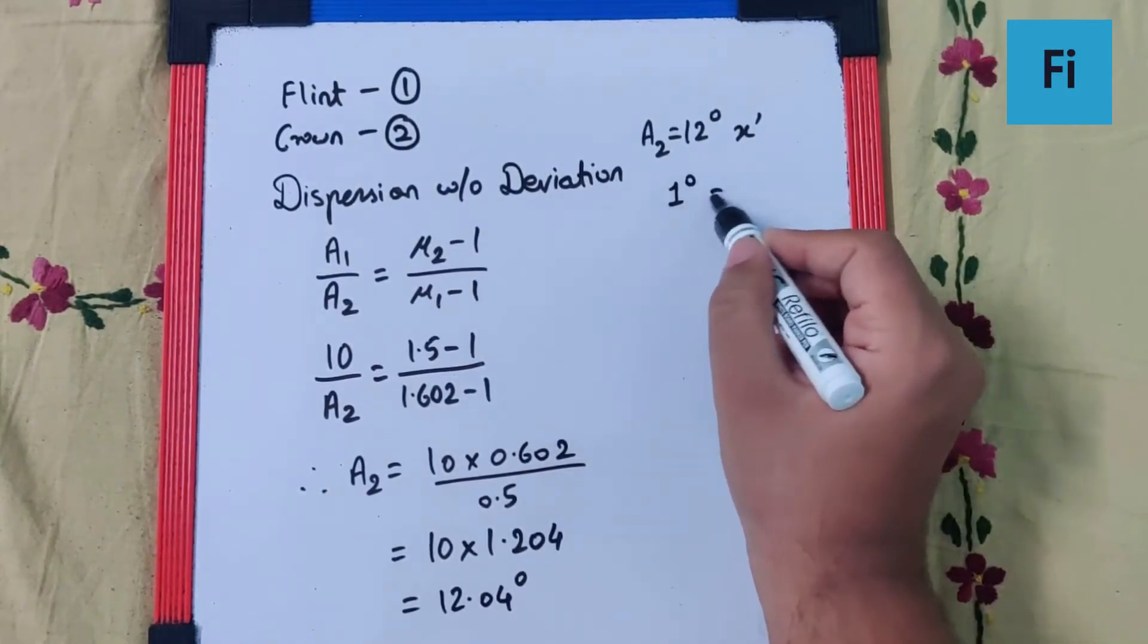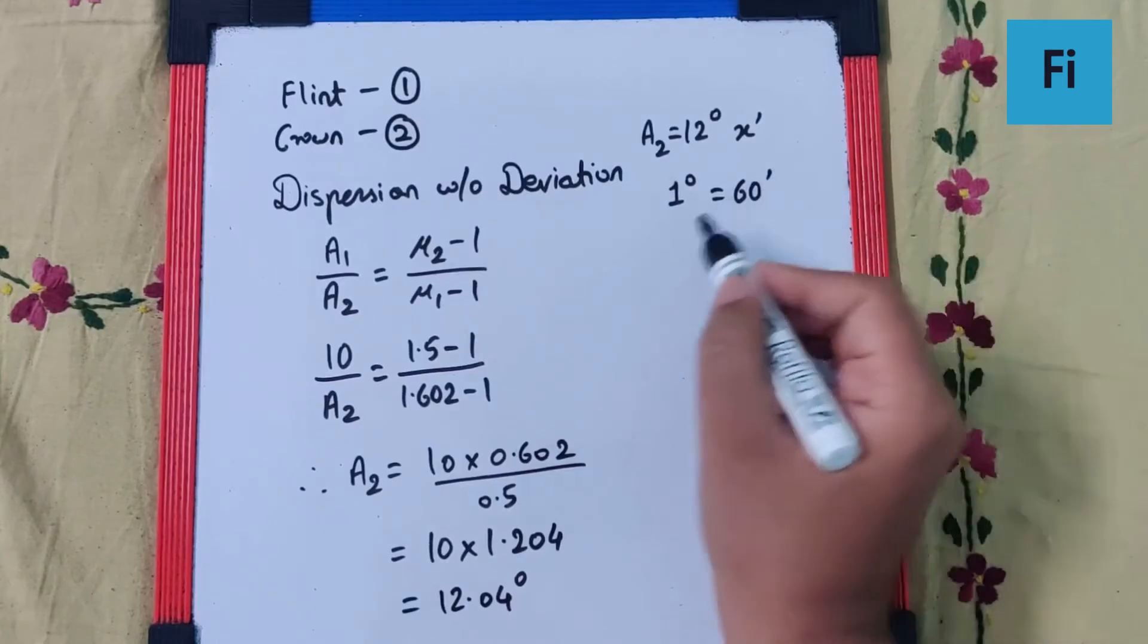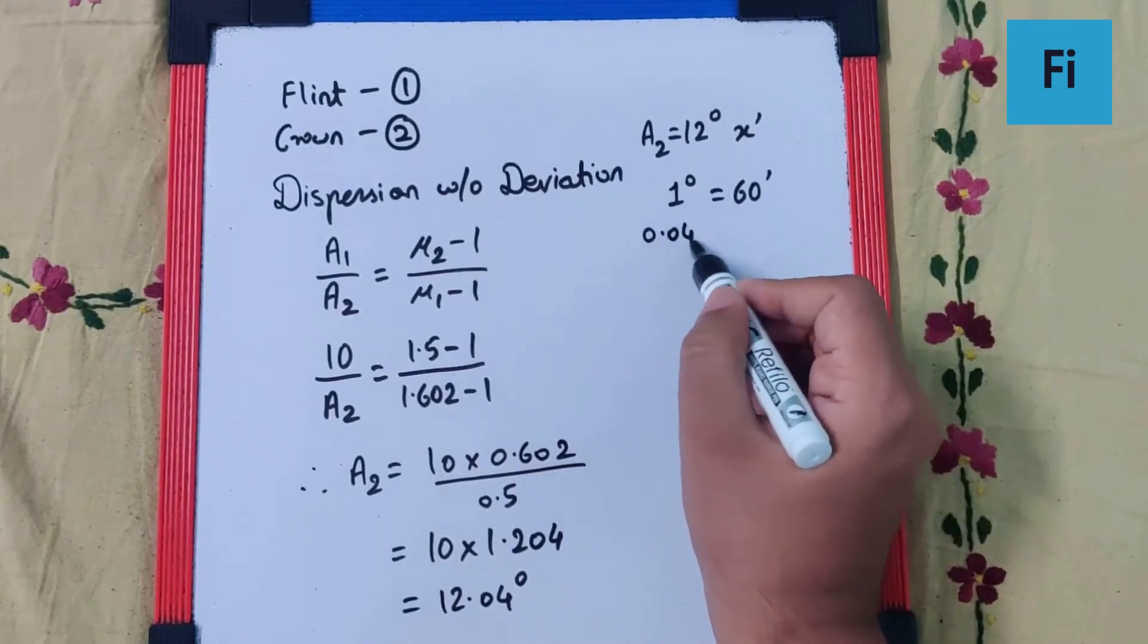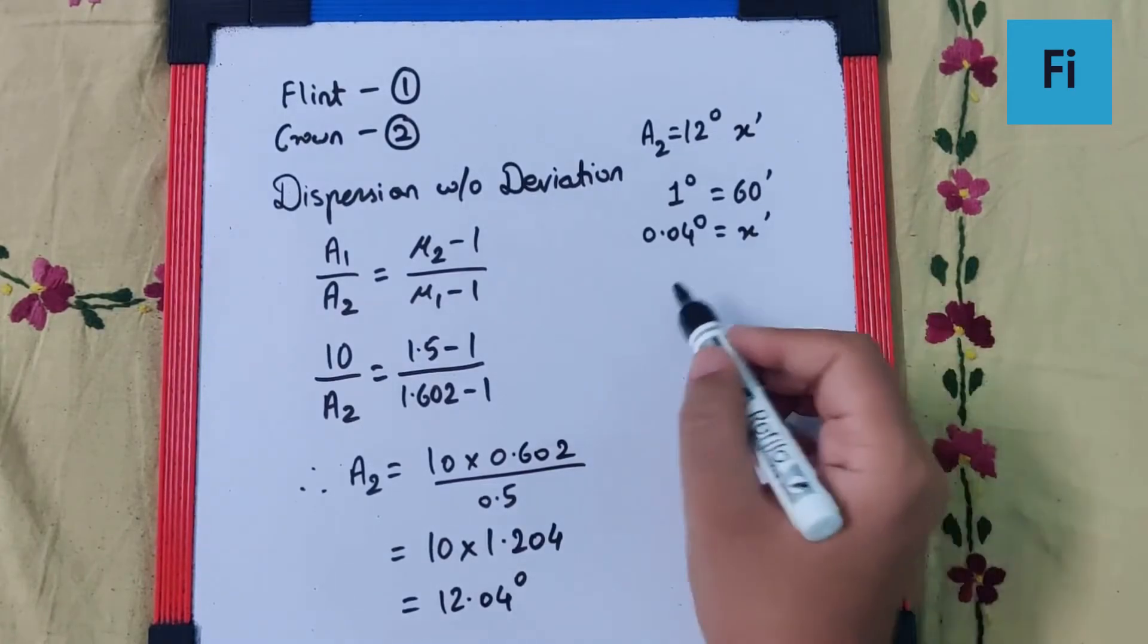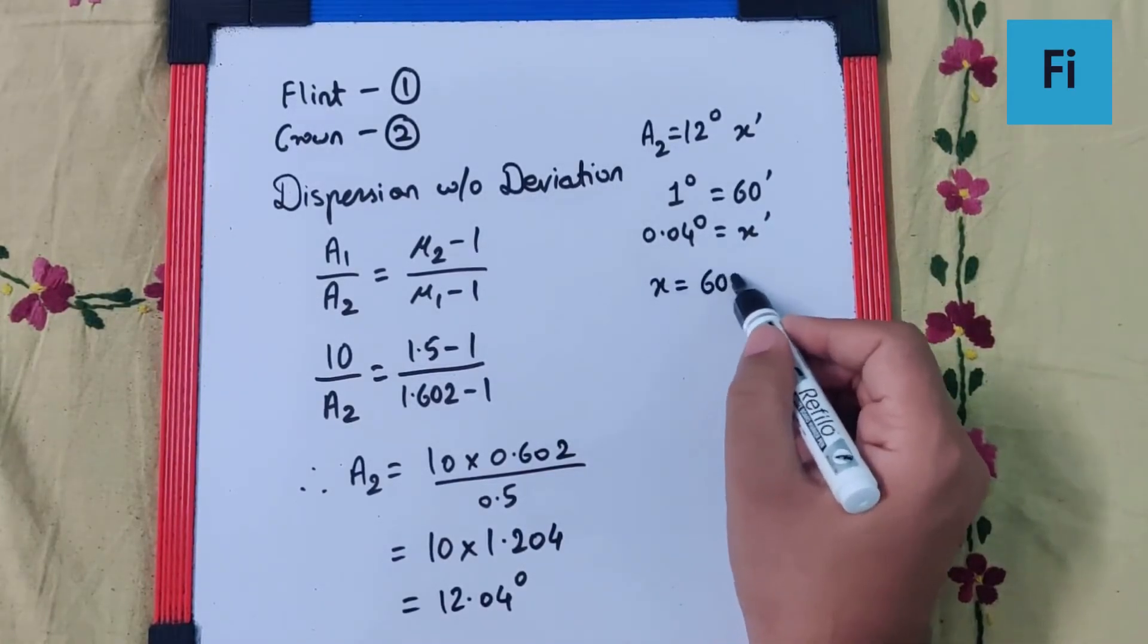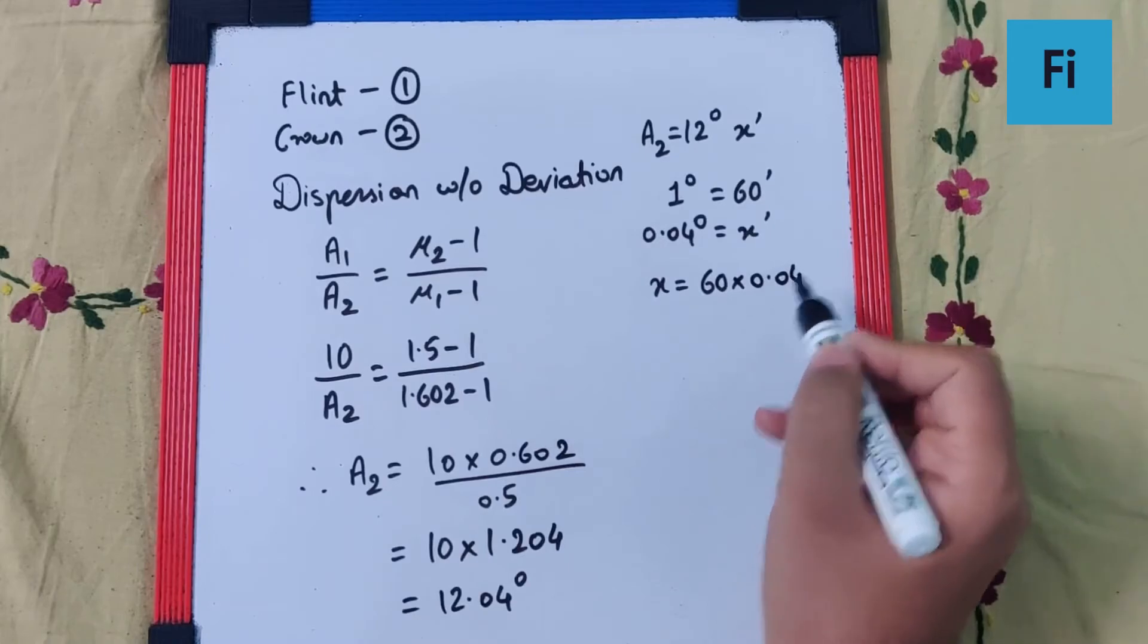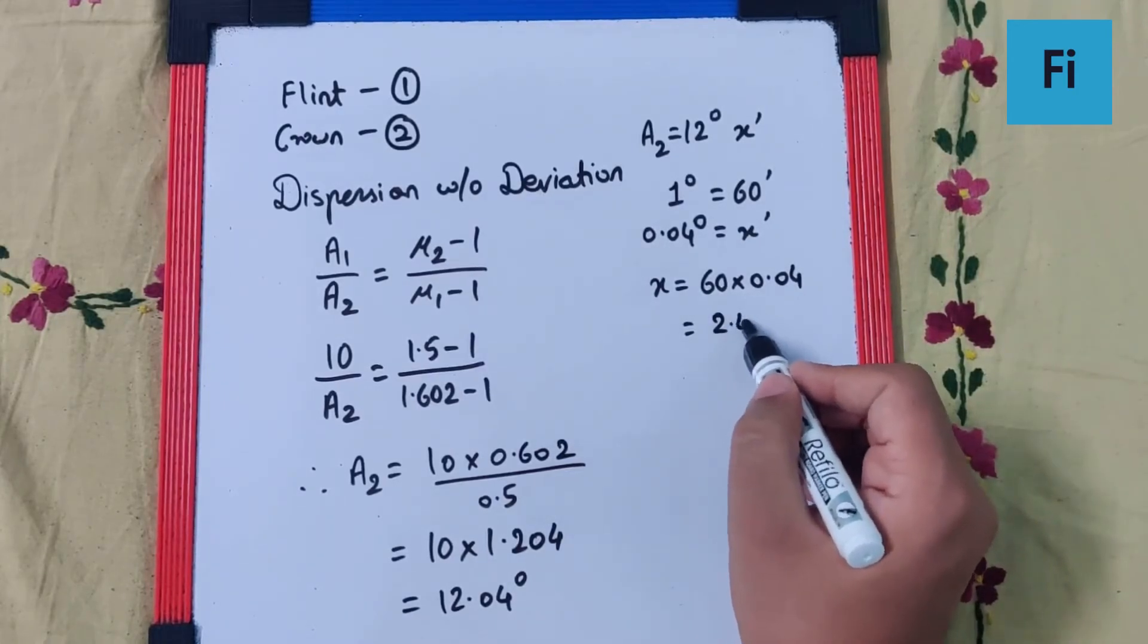Now we know 1 degree is 60 minutes, right? So 0.04 degrees, how many minutes will that be? It will be x minutes. So x will be 60 into 0.04. That's like 2.4.